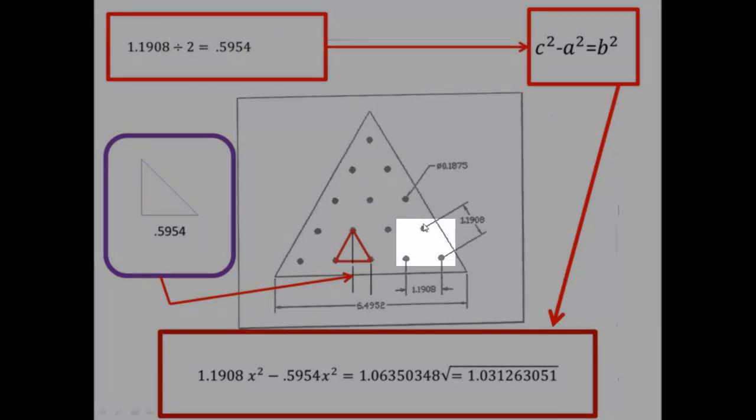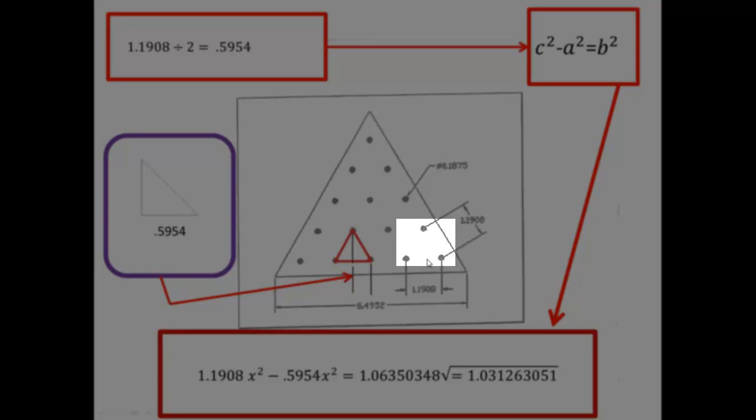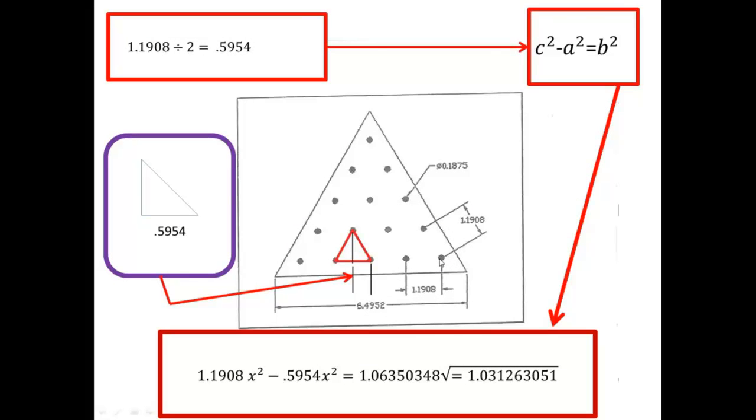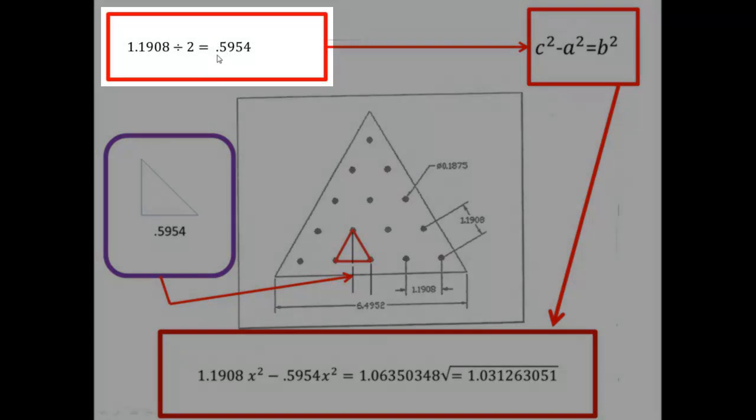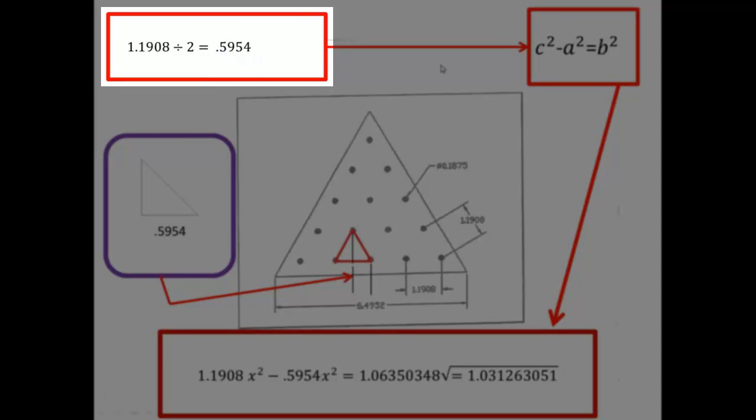Since we do know that the length and the base of the equilateral triangle is 1.1908, if we divide that number by 2, it comes up to 0.5954.